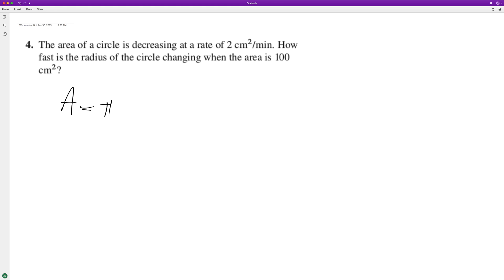We have the area is equal to pi times the radius squared. We want to find out how fast the radius has changed, so we want to solve this for r. First, divide through by pi, so we have r squared equals area divided by pi.